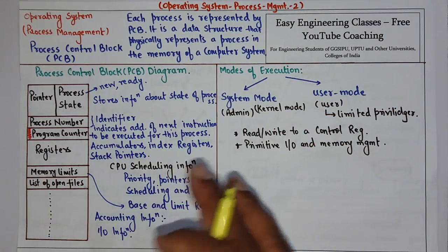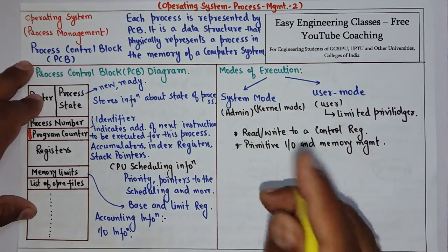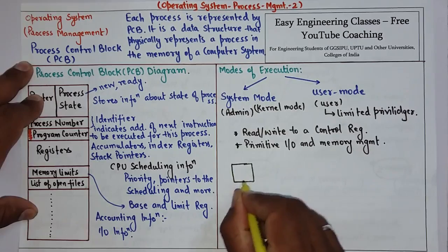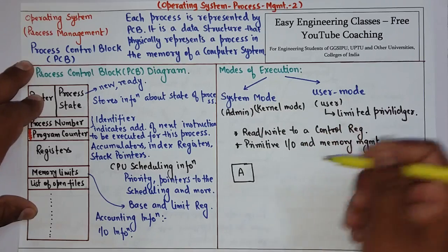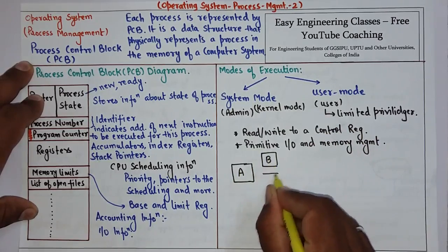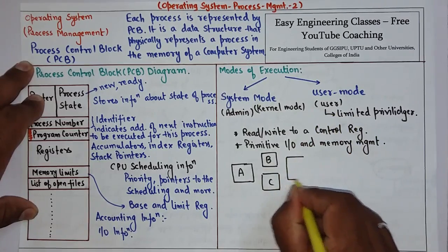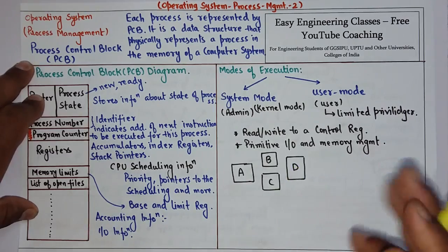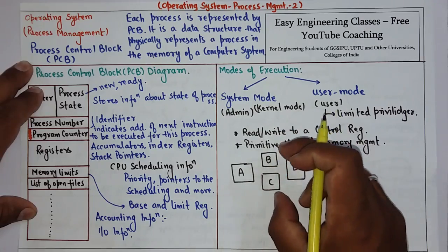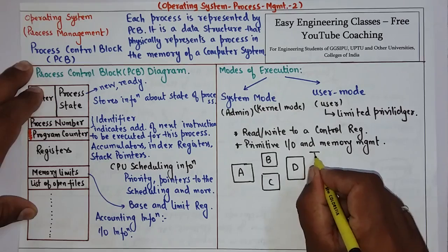Now, if different processes are running in a system, how does a user see them versus how the system sees them? From the user's point of view, suppose process A is entered and running, then processes B and C are entered and the user thinks they are running concurrently, then process D is entered. So the user sees the processes as running concurrently over time.